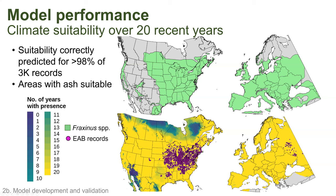The northern range edge of ash lines up almost perfectly with the yellow areas in the climate suitability map — yellow indicates that DDRP predicted climatically suitable areas across all 20 years. Areas that are dark blue were predicted to be unsuitable across all years. There may be some years in Texas and the South where unsuitability was predicted, but only for a few years. For Europe, it's even more concerning: the entire continent, with the exception of far northern areas in Scandinavia and Russia, was predicted to be climatically suitable across all 20 years.